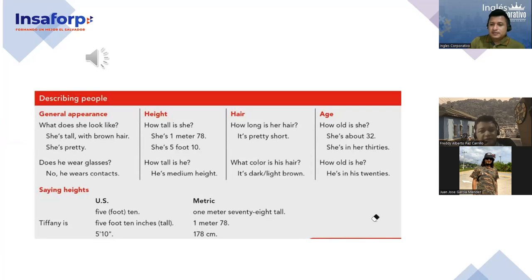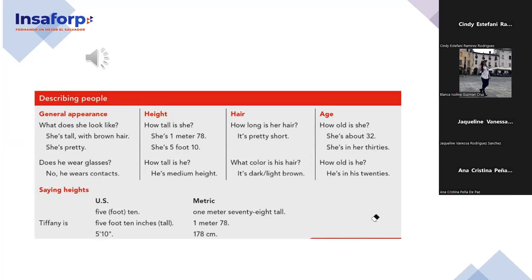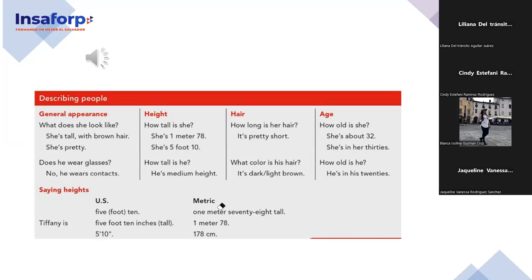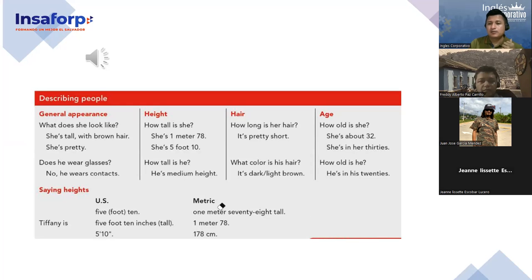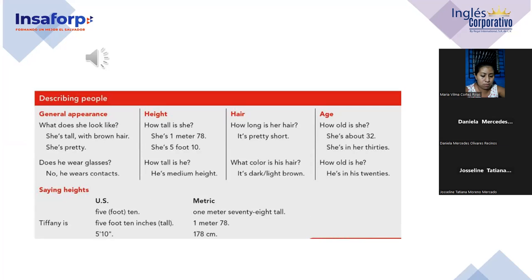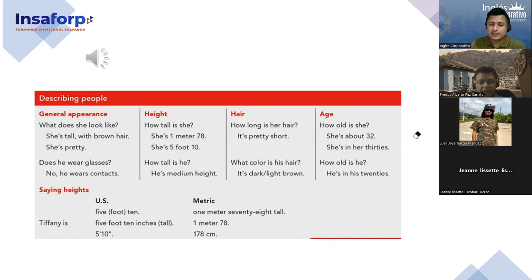That's why when we buy a product, sometimes it comes in inches and also in metrics. Like a measure tape — it comes with both systems. In the US they use inches, and we also have metrics. Any questions about this?